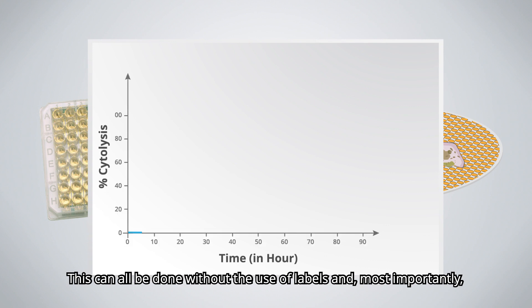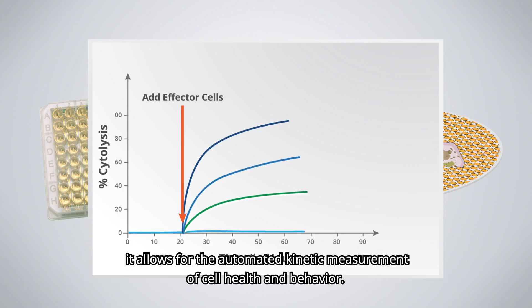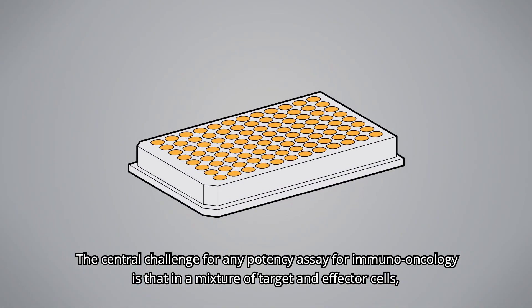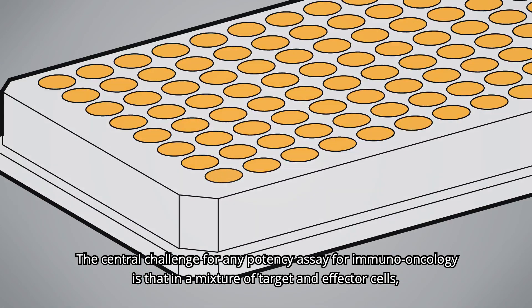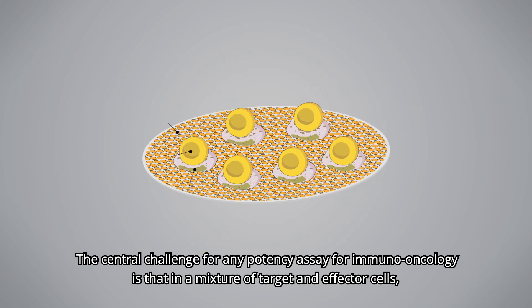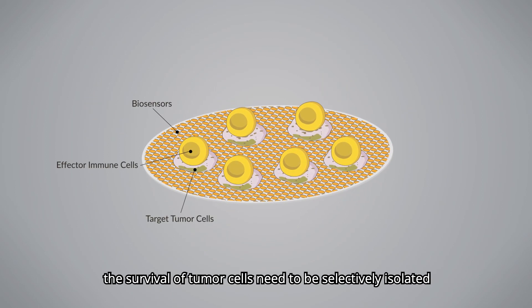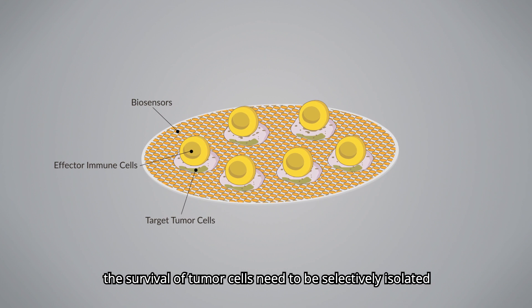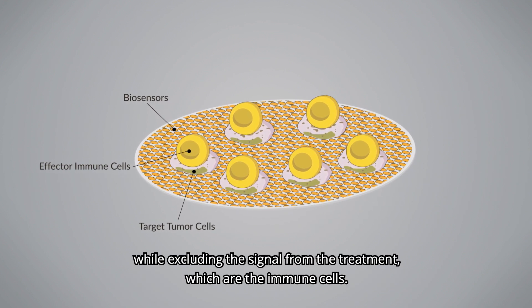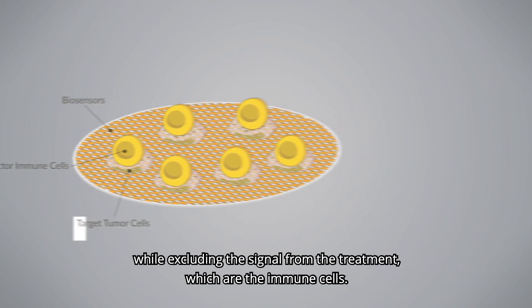This can all be done without the use of labels and, most importantly, it allows for the automated kinetic measurement of cell health and behavior. The central challenge for any potency assay for immuno-oncology is that in a mixture of target and effector cells, the survival of tumor cells needs to be selectively isolated while excluding the signal from the treatment, which are the immune cells.